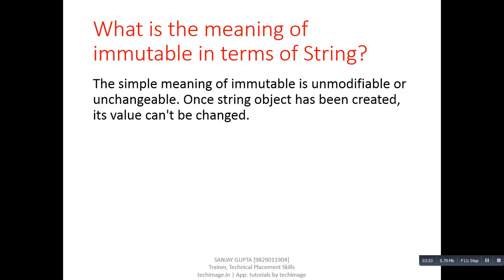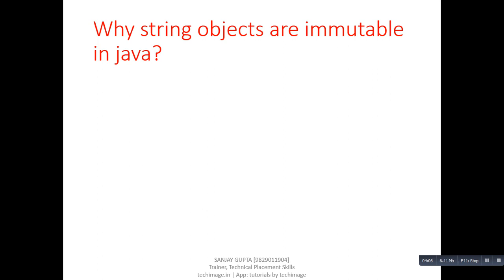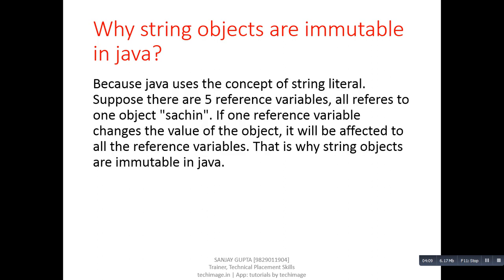Next question: what is the meaning of immutable in terms of string? Answer: The simple meaning of immutable is unmodifiable or unchangeable. Once a string object has been created, its value cannot be changed. Next question: why are string objects immutable in Java? Answer: Because Java uses the concept of string literals. Suppose there are five reference variables — all refer to one object. If one reference variable changes the value of the object, it will affect all the reference variables. That is why string objects are immutable in Java.